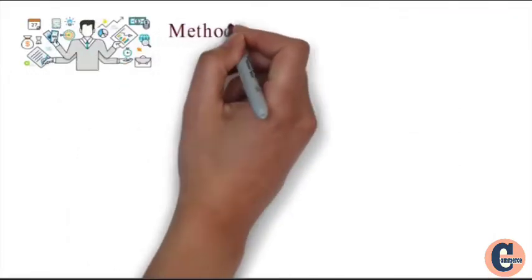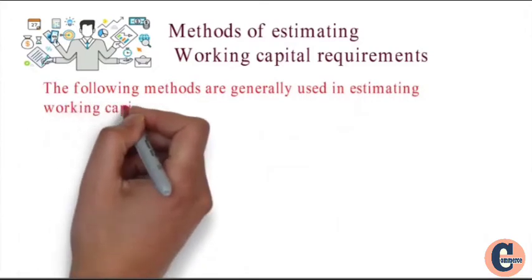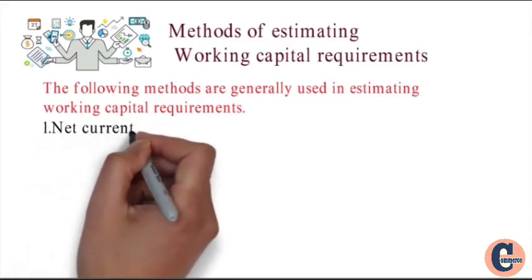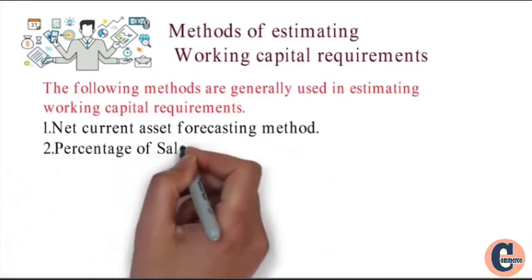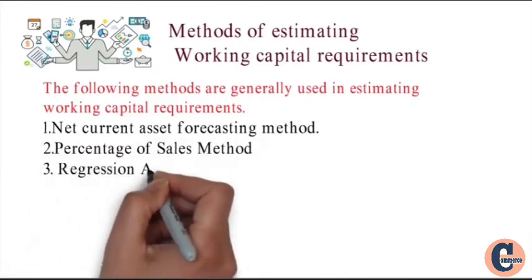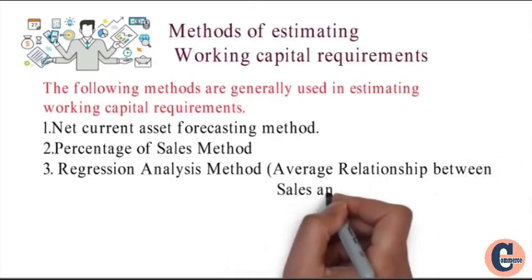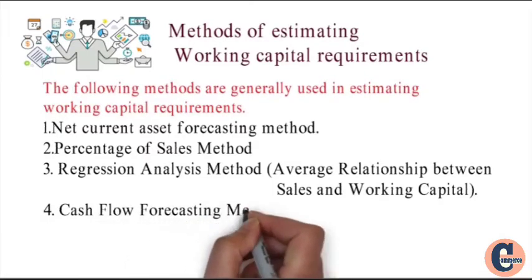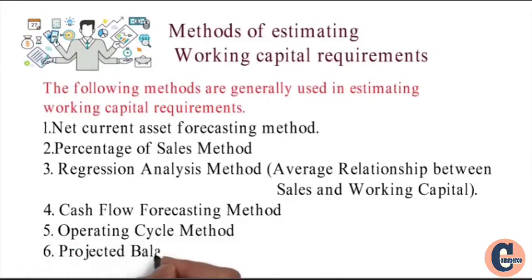The following methods are generally used in estimating working capital requirements. First method: net current asset forecasting method. Second: percentage of sales method. Third: regression analysis method, where we consider the average relationship between sales and working capital. Fourth method: cash flow forecasting method. Fifth: operating cycle method. Sixth method: projected balance sheet method.